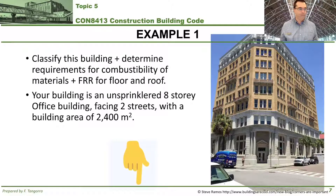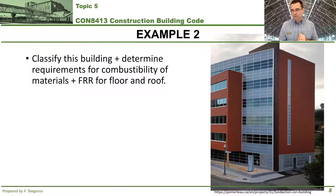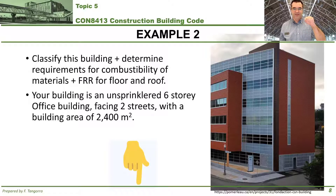Example number two is a different building. You are asked to classify it and determine the requirements for combustibility of material and the fire resistance rating for floor and roof. This specific building is an unsprinklered six-story office building, facing two streets, with a building area of 2,400 square meters. The video solution to example 2 will also be linked in the description.